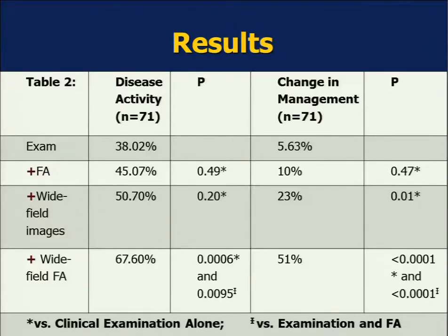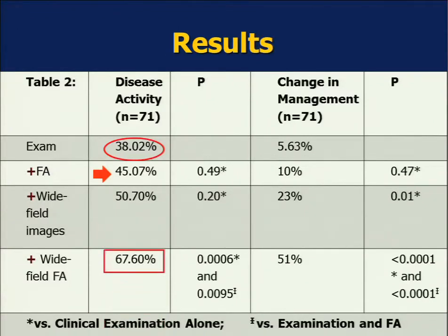On examination alone, about 38% of the time the clinician thought that disease was active. When standard traditional fluorescein angiography was added, that increased to 45%. When wide-field imaging fluorescein angiography was added, that increased to 67%. So the change from 38% on examination alone, or 45% with traditional FA, increased to 67% of the time when the clinician determined the patient to be active — and that was certainly statistically significant.